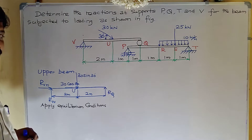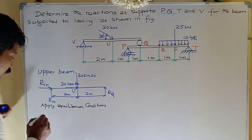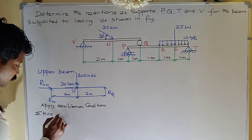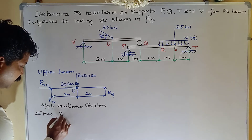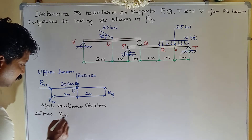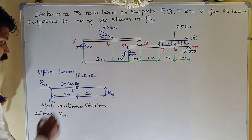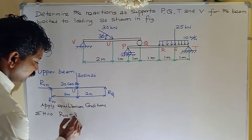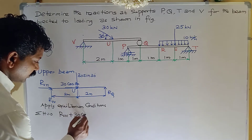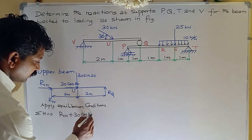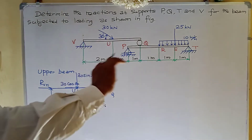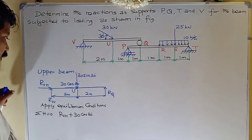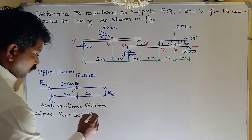Now apply the equilibrium conditions. First condition: σH = 0. RVH plus 30 cos 30° equals 0. Both are towards the right side direction, so both are positive.